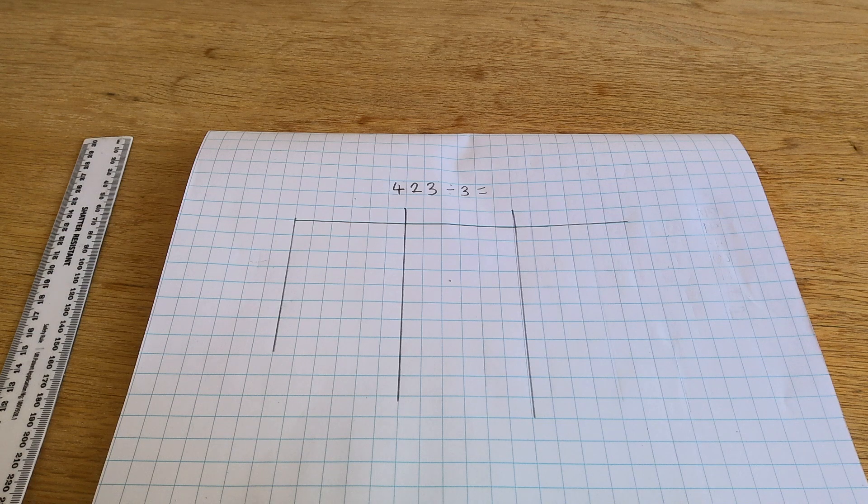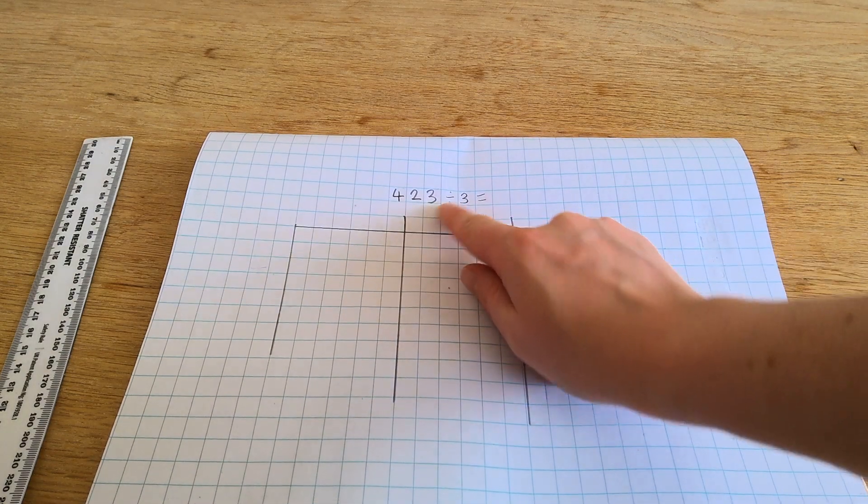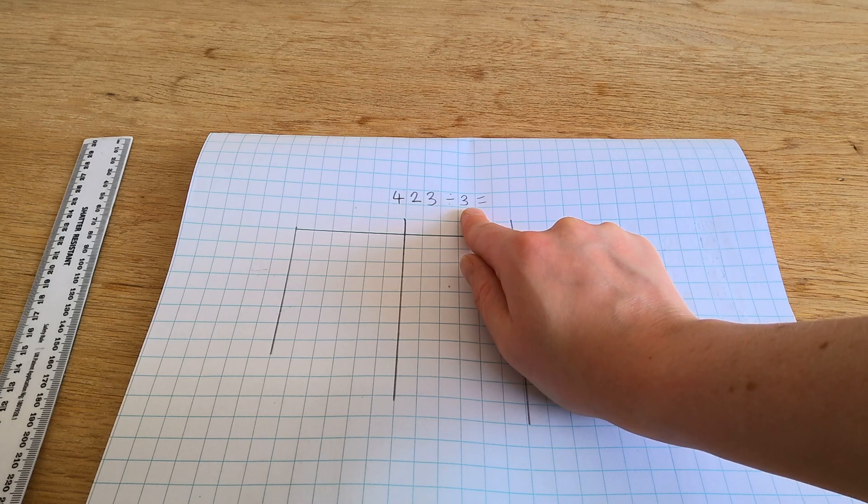This is a three-digit number divided by a one-digit number that we're going to do with grouping place value counters. I've got a dividend of 423 and I'm dividing it by a divisor of 3.